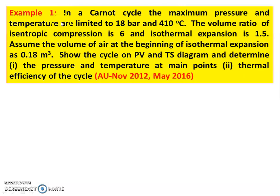First question, example number 1. In a Carnot cycle, the maximum pressure and temperature are limited to 18 bar and 410 degree Celsius. The volume ratio of isentropic compression is 6 and isothermal expansion is 1.5. Assume the volume of air at the beginning of isothermal expansion as 0.18 meter cube. Show the cycle on the PV and TS diagram. Determine pressure and temperature at the main points and thermal efficiency of the cycle.